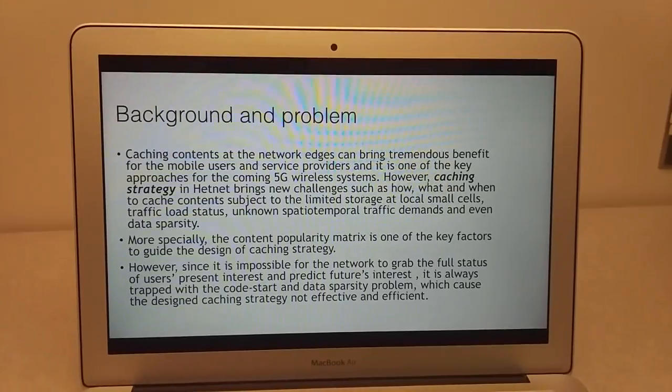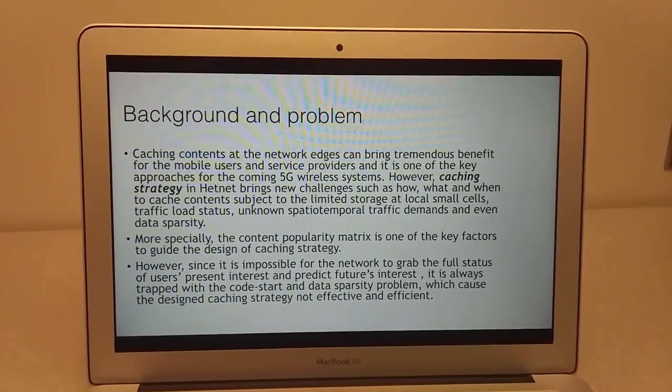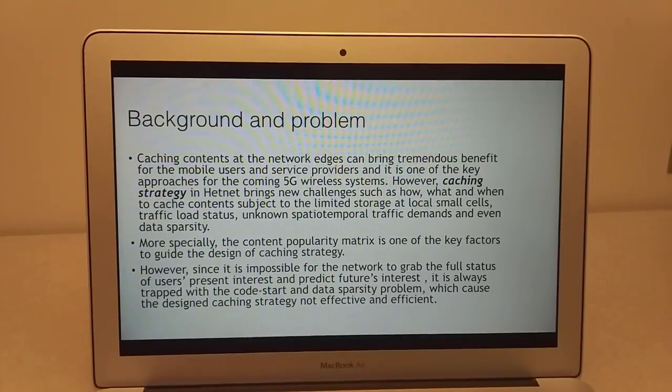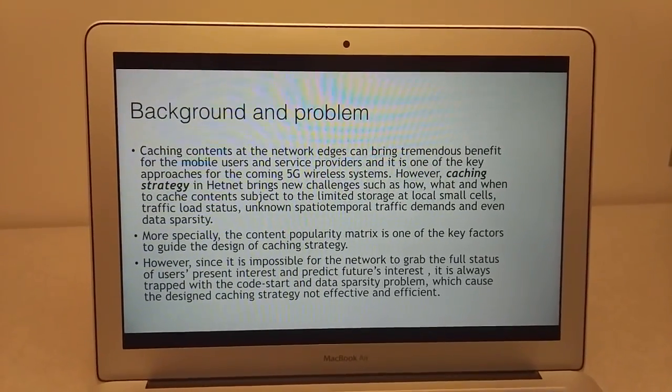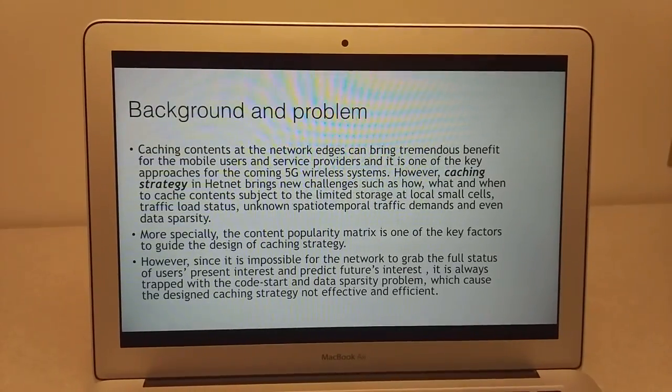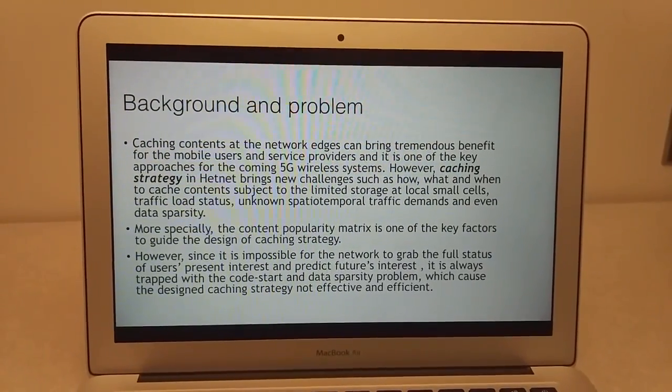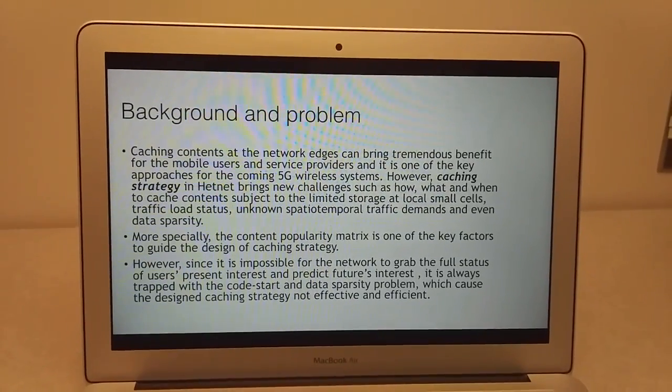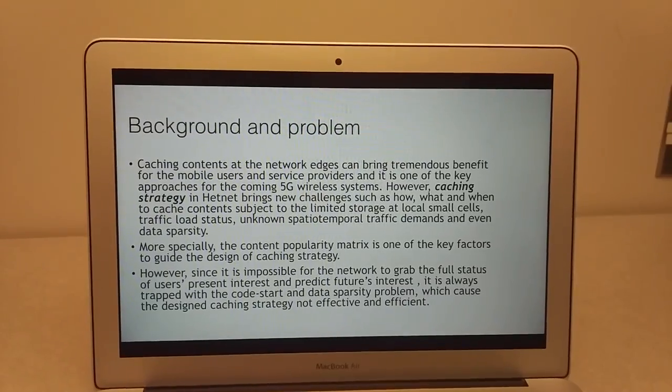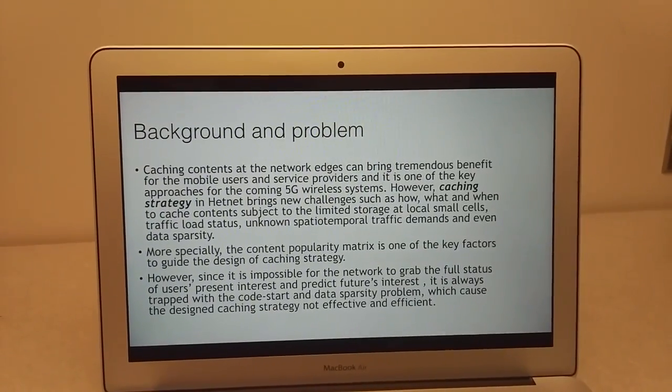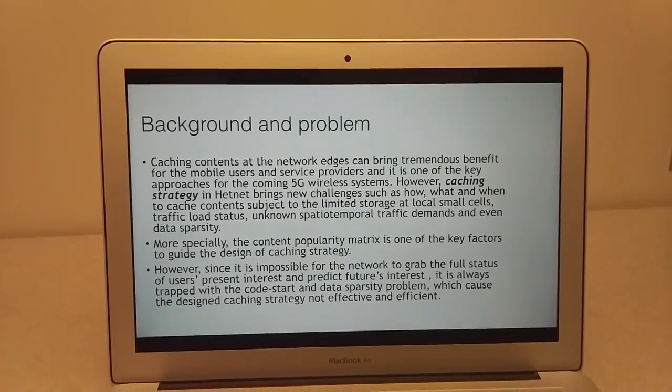More especially, the content popularity matrix is one of the key factors to guide the design of the caching strategy. However, since it is impossible for the network to grab the full status of users' present interests and predict future interests, it is always trapped with the cold start and data sparsity problem, which causes the designed caching strategies to not be effective and efficient.